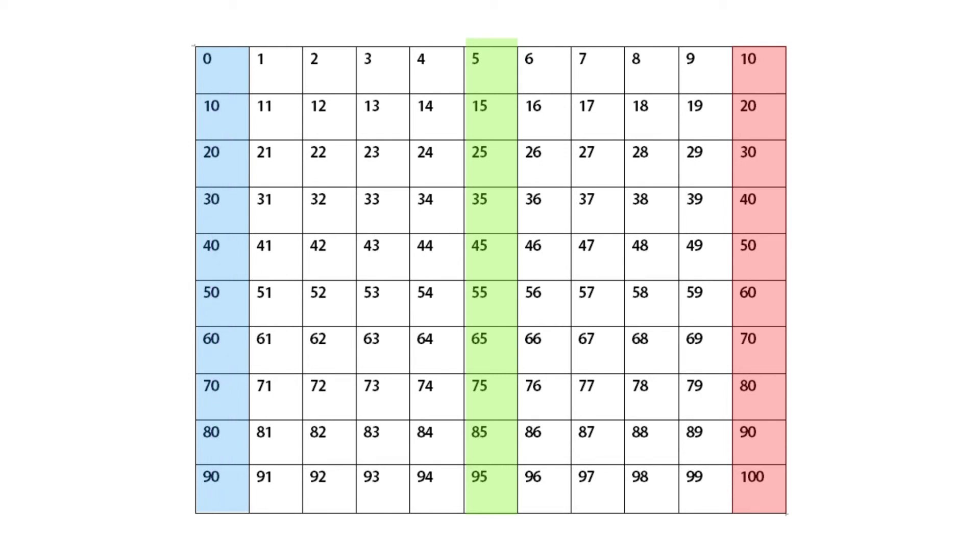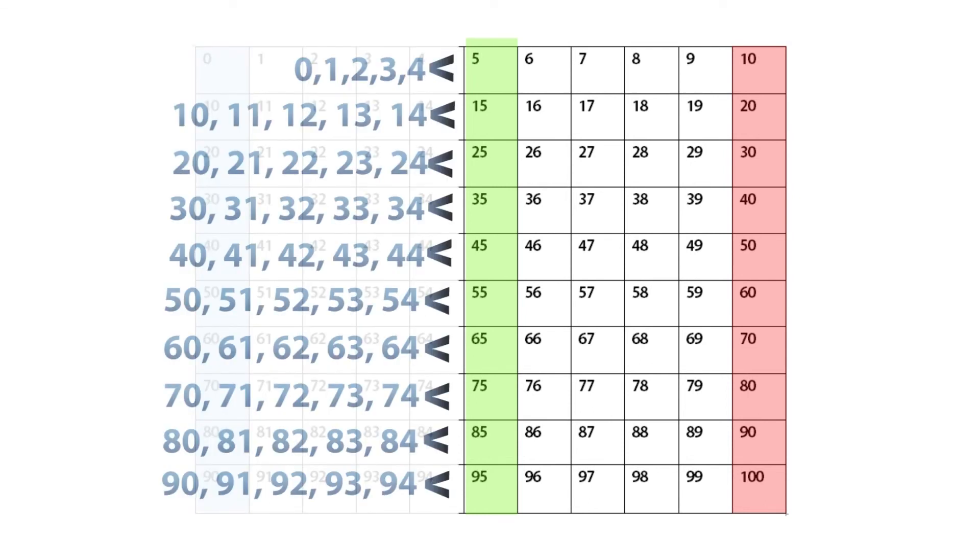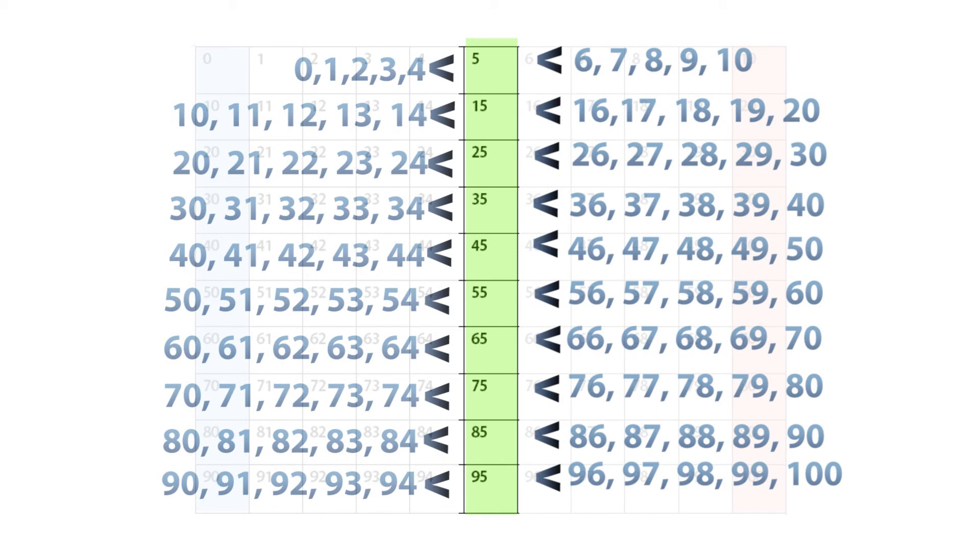It looks to me that if you set up the numbers from each multiple of 10 to the next multiple of 10 in every row, the numbers that are on the left side of the 5 are less than 5, and the numbers that are on the right side of 5 are greater than 5.